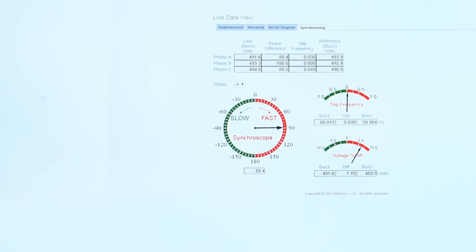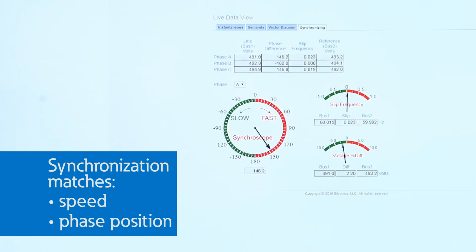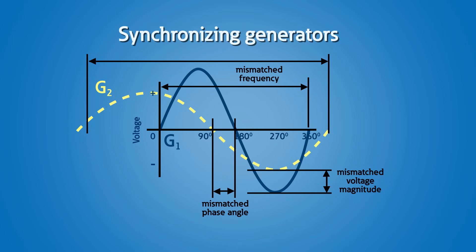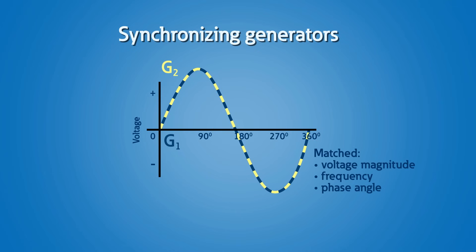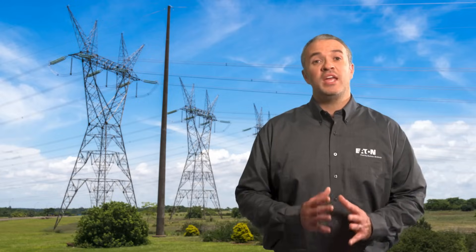The objective of synchronization is to match speed and phase position, so there is little or no transfer of energy when paralleling multiple units or connecting to an existing grid. Synchronizing requires matching voltage magnitudes, frequency, and phase angle. On systems with commercial or industrial generators, synchronizing requires a special transfer switch with that capability.